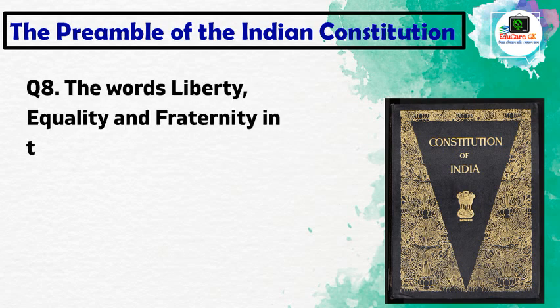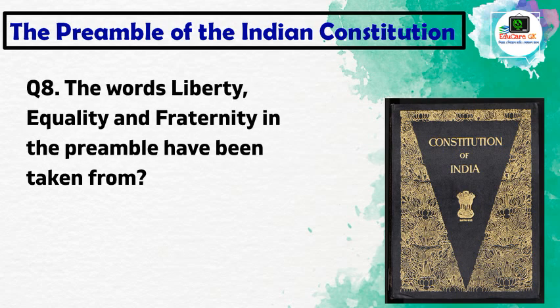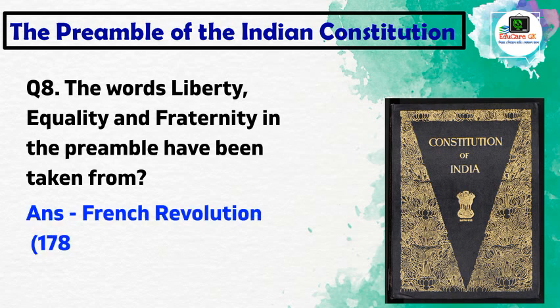The words 'liberty', 'equality', and 'fraternity' in the preamble have been taken from the French Revolution of 1789 to 1799.